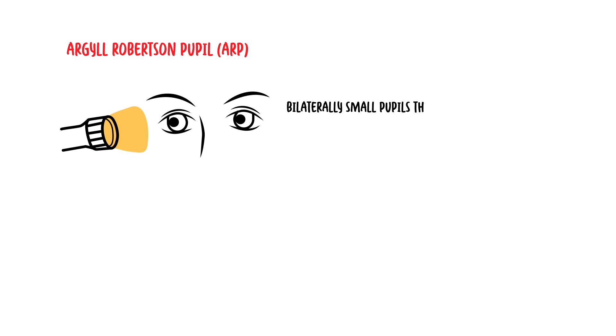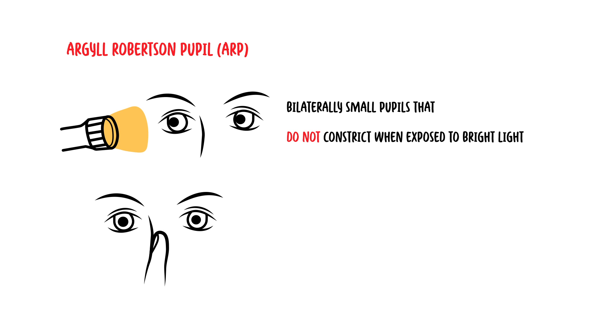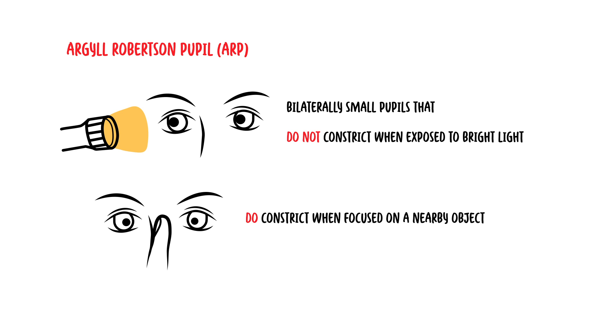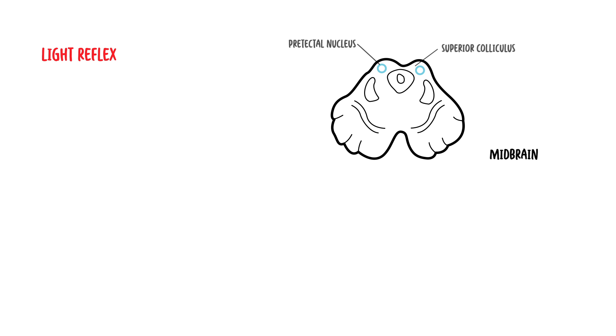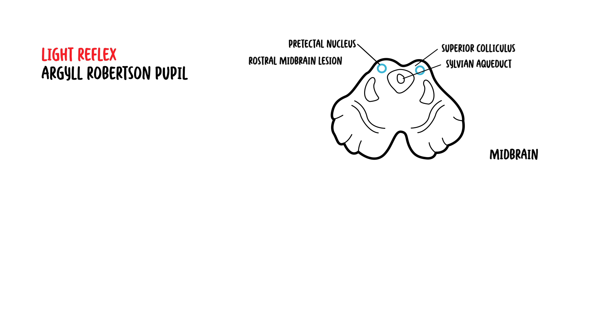The second clinical anatomy important to note within the midbrain is Argyll-Robertson pupil, which describes a physical exam finding showing bilaterally small pupils that do not constrict when exposed to bright light, but the pupils do constrict when focused on a nearby object. The rostral midbrain, located near the sylvian aqueduct, is thought to be the most likely location of the lesion that causes Argyll-Robertson pupil.